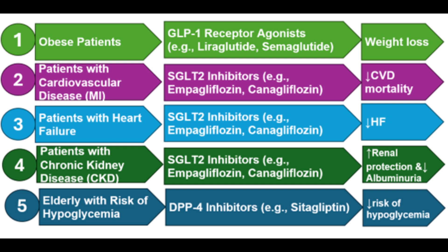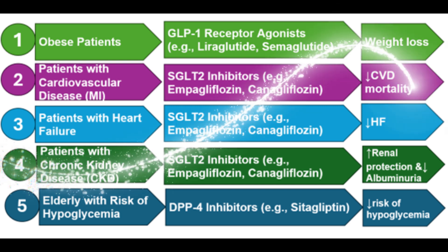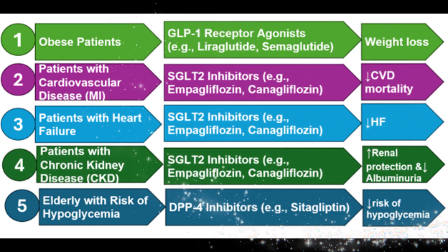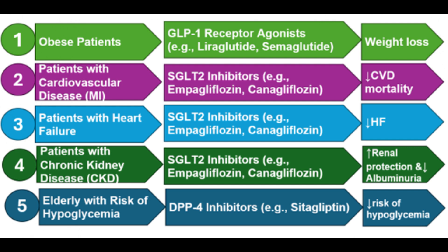Case 5 – Elderly Patients with Risk of Hypoglycemia. In elderly patients at risk for hypoglycemia, DPP-4 inhibitors like sitagliptin are ideal. These medications have a minimal risk of hypoglycemia and are weight-neutral.